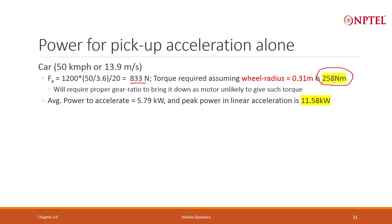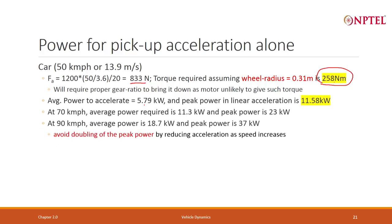Average power requirement to accelerate is 6 kW — not that bad. Peak power requirement is 12 kW, and this is at 50 km/h. If I go to 70 km/h, my peak power requirement will go to 37 kW.